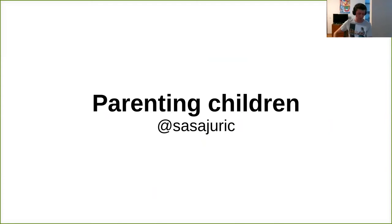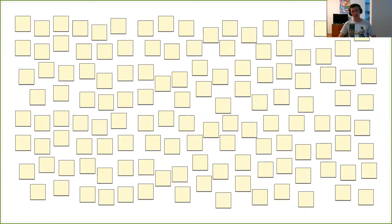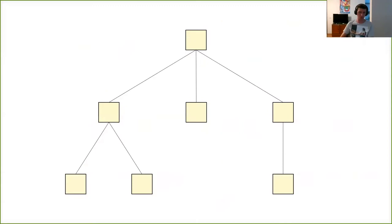Parenting children in the context of OTP — OTP has a couple of different aspects, but one important aspect is the fact that it provides structure to our processes. Without OTP, if we use plain spawn, we end up with an unorganized heap of processes. There will always be some logical relationships between these processes, but we don't state them explicitly. OTP gives us the means to give structure to our processes in the shape of the supervision tree.